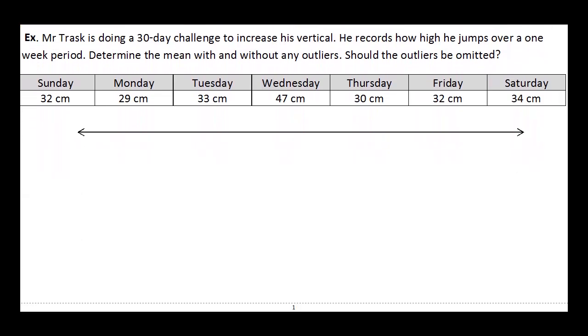Okay, so Mr. Trask is doing his 30-day challenge to try to increase his vertical. He records how high he jumps over one week period. And we have to determine the mean with and without the outliers. And then this last question here is actually the tricky one, and that's should the outliers be omitted? So should we use them or not?